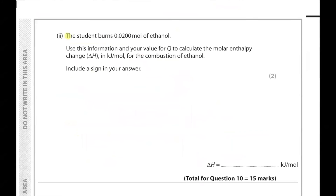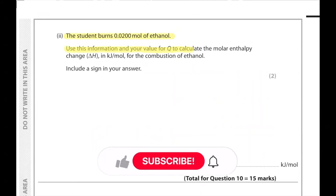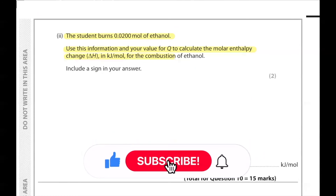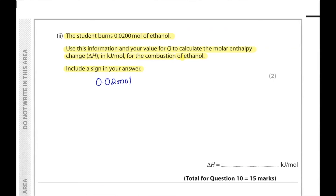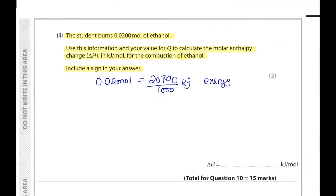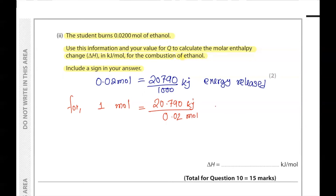Part 2. The student burns 0.02 mol of ethanol. Use this information and your value for Q to calculate the molar enthalpy ΔH in kJ/mol for the combustion of ethanol, including a sign. For 0.02 moles, after dividing, the answer is −1039.5 kJ/mol. The negative sign is given because this is an exothermic reaction — energy is released.